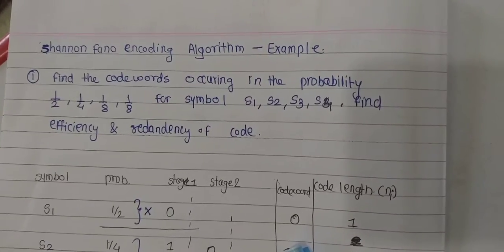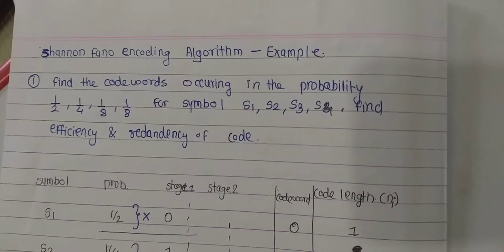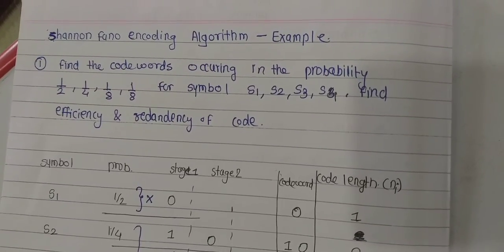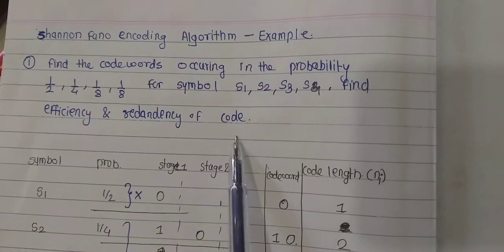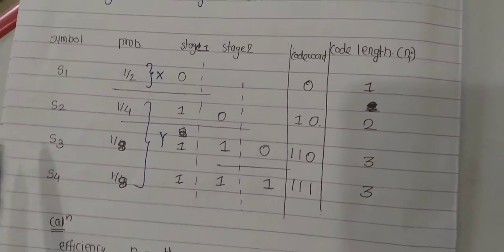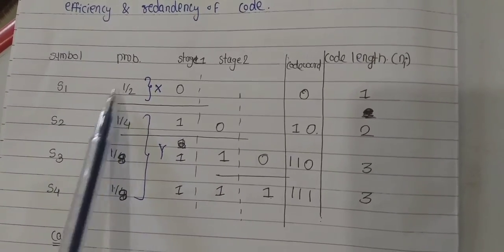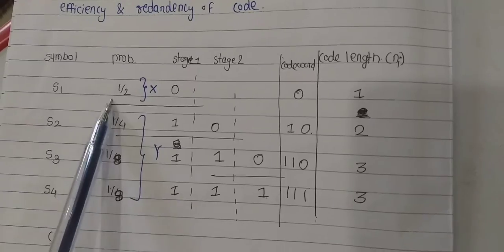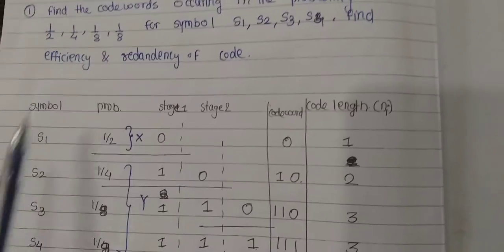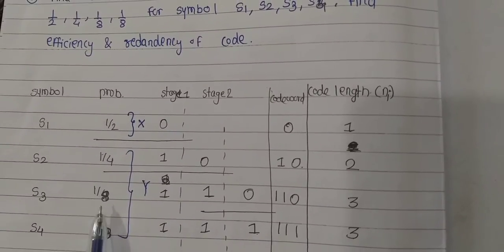Hello friends, today we are going to check the Shannon-Fano coding example. The problem is: find the code words for symbols s1, s2, s3, s4 occurring with probabilities 1/2, 1/4, 1/8, 1/8, and find the efficiency and redundancy of the code. The probabilities must be written in decreasing order, and here they are already arranged in descending order: s1, s2, s3, s4 with probabilities 1/2, 1/4, 1/8, 1/8.